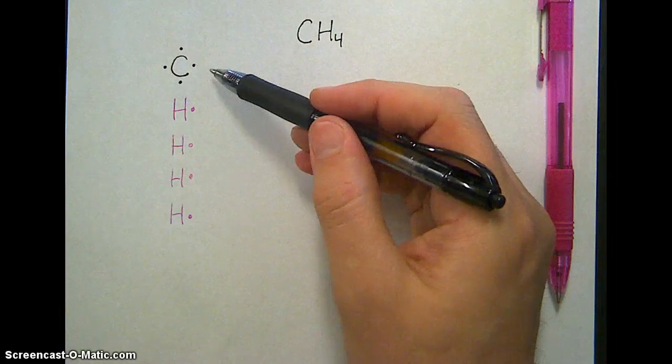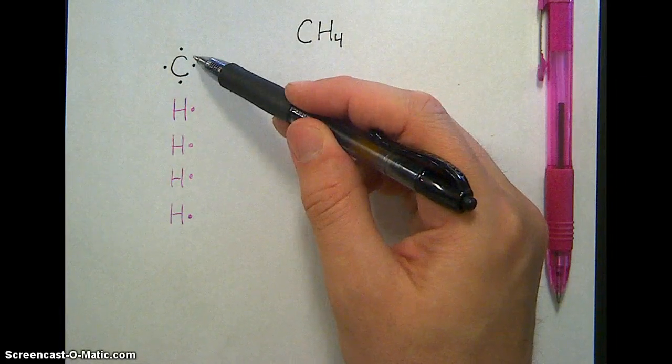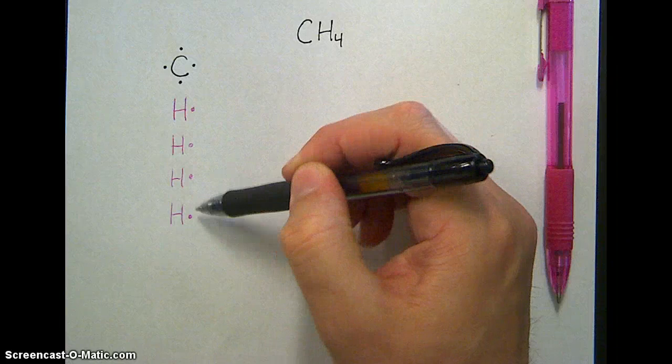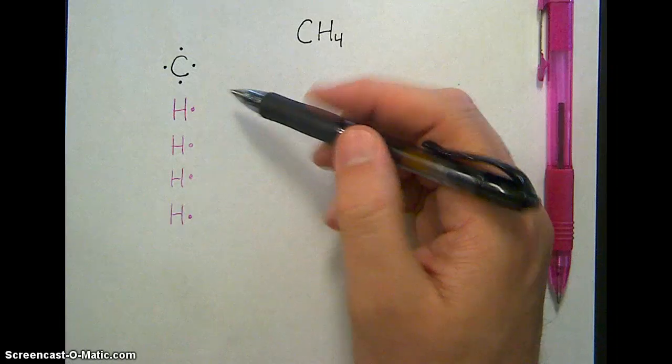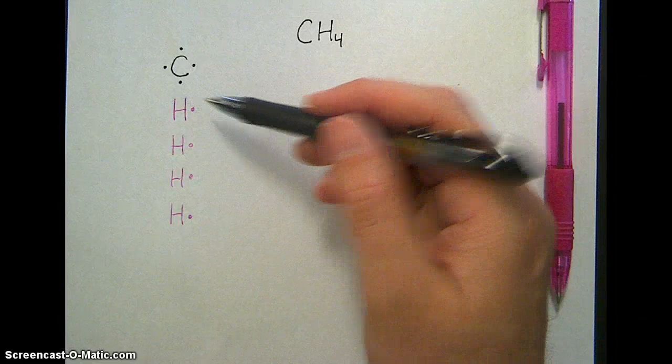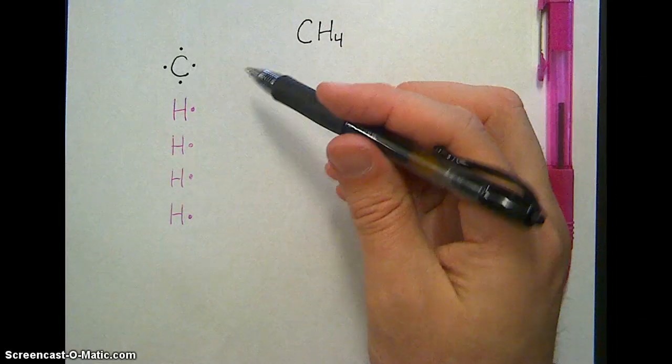Carbon is more stable if it'll have eight electrons in its outer level. Hydrogen is more stable if it'll get two. So we're going to combine these into one molecule where electrons are shared in pairs, so that each atom is a little more stable some of the time.